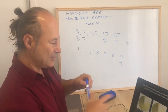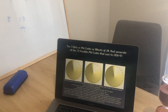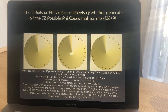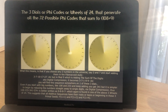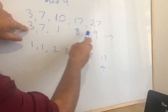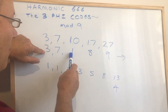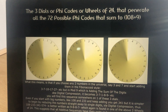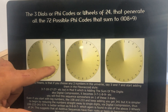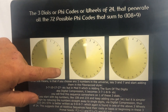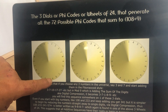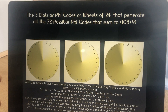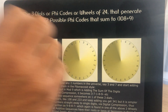If you zoom in on these three codes, we're looking for the numbers we wrote on the board. We're looking for the sequence 3, 7, 1, 8, 9. Can we find 3, 7, 1, 8, 9 in this wheel? And indeed, in any of these wheels — there are three distinct Phi Codes — we can find it. Starting here: there's the 3, there's the 7, there's the 1, there's the 8, and there's the 9. Even though the numbers appear in different orientations, the sum of any two numbers in the universe will always fit into one of these three.